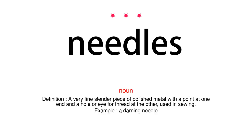Noun. Definition: A very fine slender piece of polished metal with a point at one end and a hole or eye for thread at the other, used in sewing. Example: A darning needle.